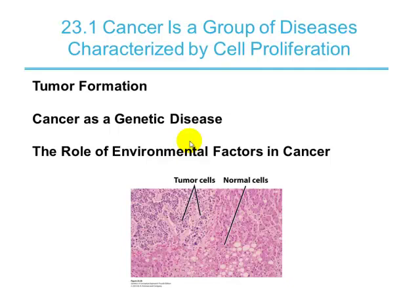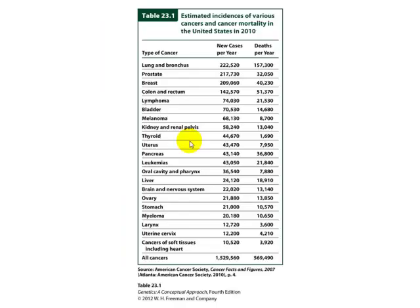We have tumor formation. We have to know that cancer is a genetic disease because it has to do with mutations in genes. There are also lots of environmental factors that can influence epigenetics and the development of cancer. These are the most common types of cancers we see in the United States. At the top is lung cancer — a lot of people love to smoke — so epigenetic factors influence how your lung cells are going to behave.